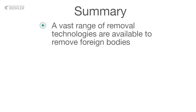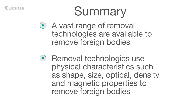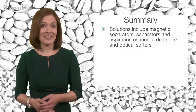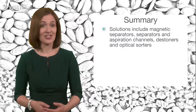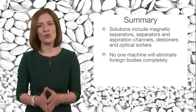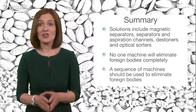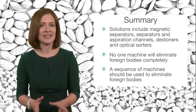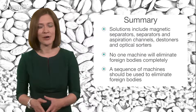There are a number of different removal technologies that processors can use to eliminate these foreign bodies. These technologies use physical characteristics such as shape, size, colour, density and magnetic properties to remove foreign bodies. They are magnetic separators, separators and aspiration channels, de-stoners and optical sorters. A single machine will not remove all foreign bodies, so a solid line of defence — a sequence of machines — should be used throughout the entire nut processing line to minimise the risk of foreign bodies being present.